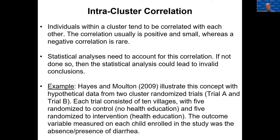In the POST trial, investigators randomized the medical practices to intervention and control instead of randomizing individual study participants, primarily because they were concerned about contamination — study participants within a medical practice would discuss or share materials with each other. Individuals within a cluster tend to be correlated; the correlation is usually positive and small, whereas negative correlation is rare. Statistical analyses must account for this correlation and cannot rely on standard t-tests or chi-square tests.